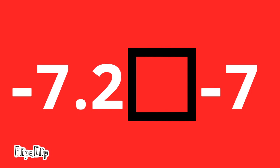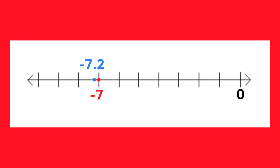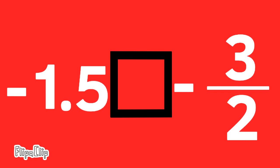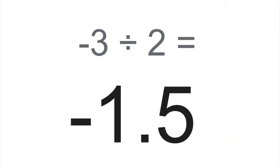Negative 7 and 2 tenths compared to negative 7. Negative 7 and 2 tenths is further to the left on the number line than negative 7, making negative 7 and 2 tenths smaller or less than negative 7. Negative 7 and 2 tenths is less than negative 7. Negative 1 and 5 tenths compared to negative 3 halves. Negative 1 and 5 tenths is equal to negative 3 halves, because negative 3 halves, or negative 3 divided by 2, equals negative 1 and 5 tenths.